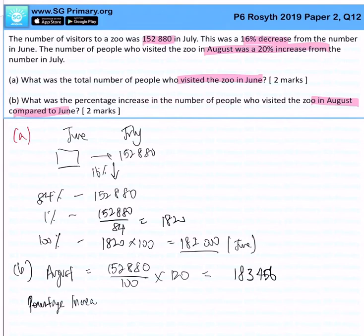I want to find the change. The final value is 183,456, the initial value in June is 182,000. So originally in June there is 182,000, so what is the percentage increase?